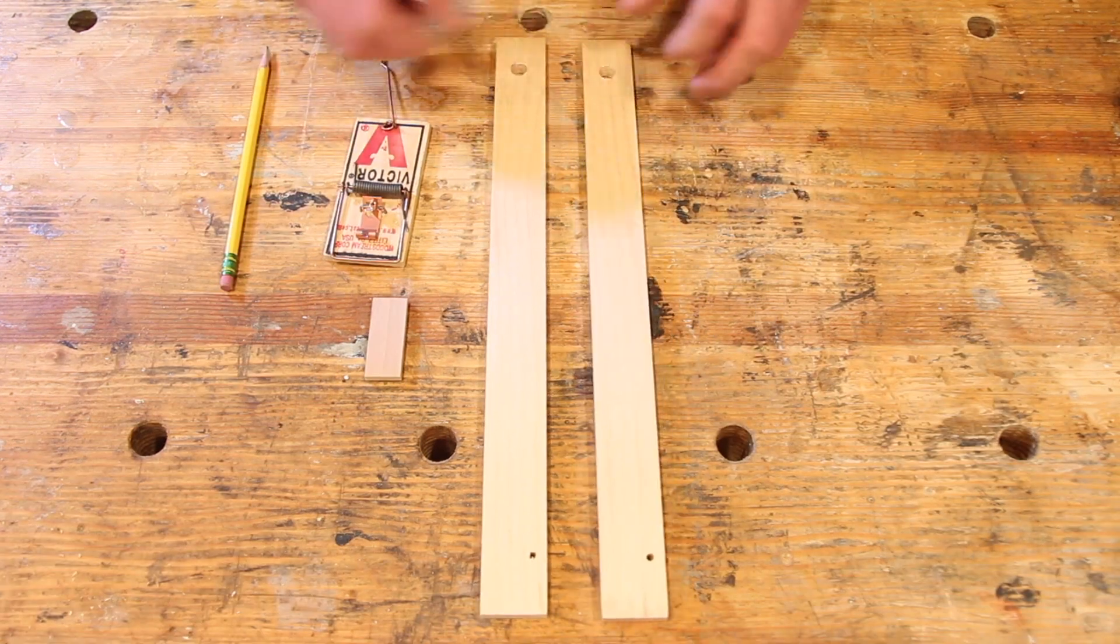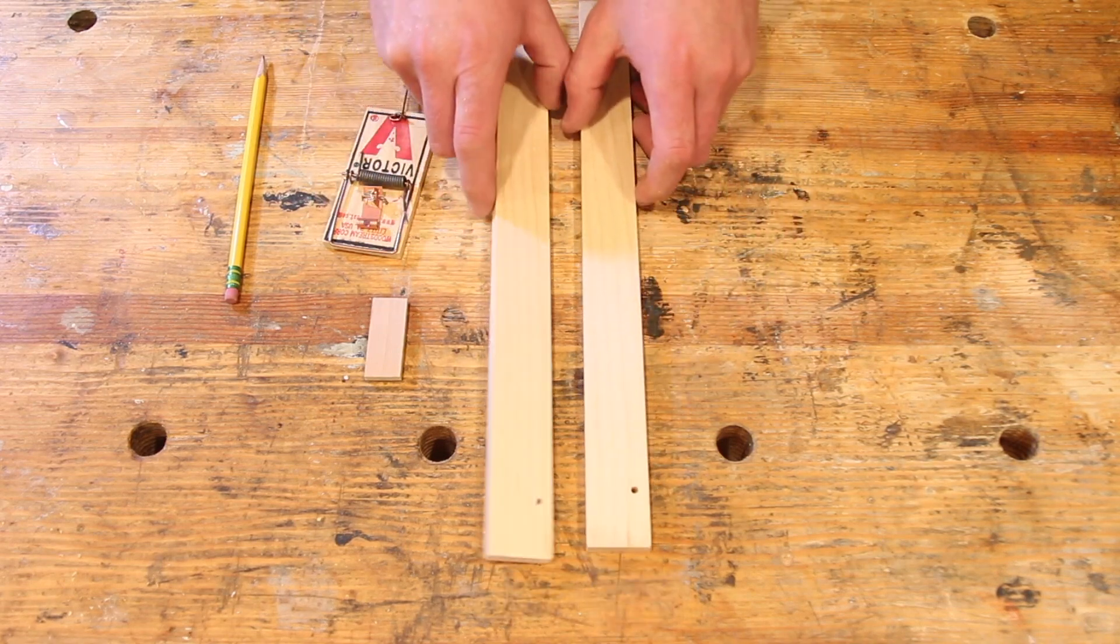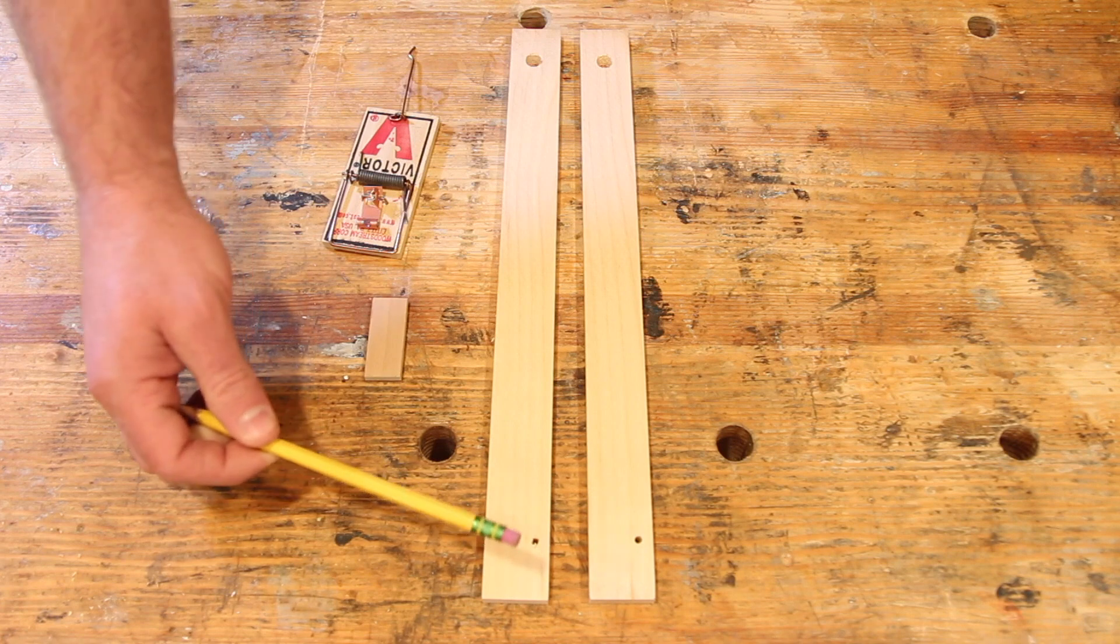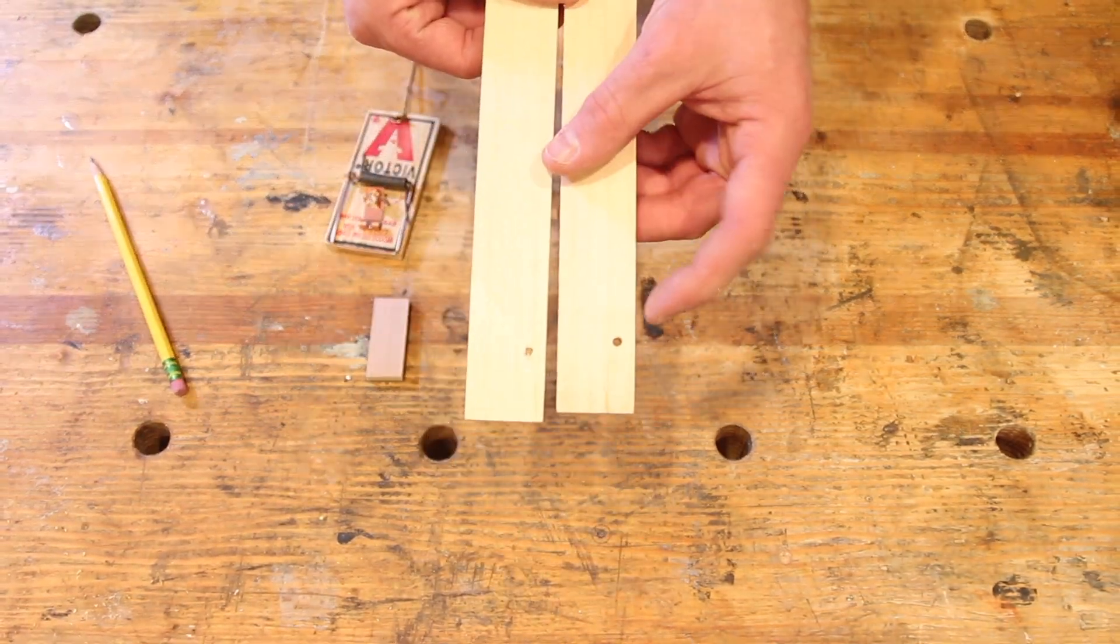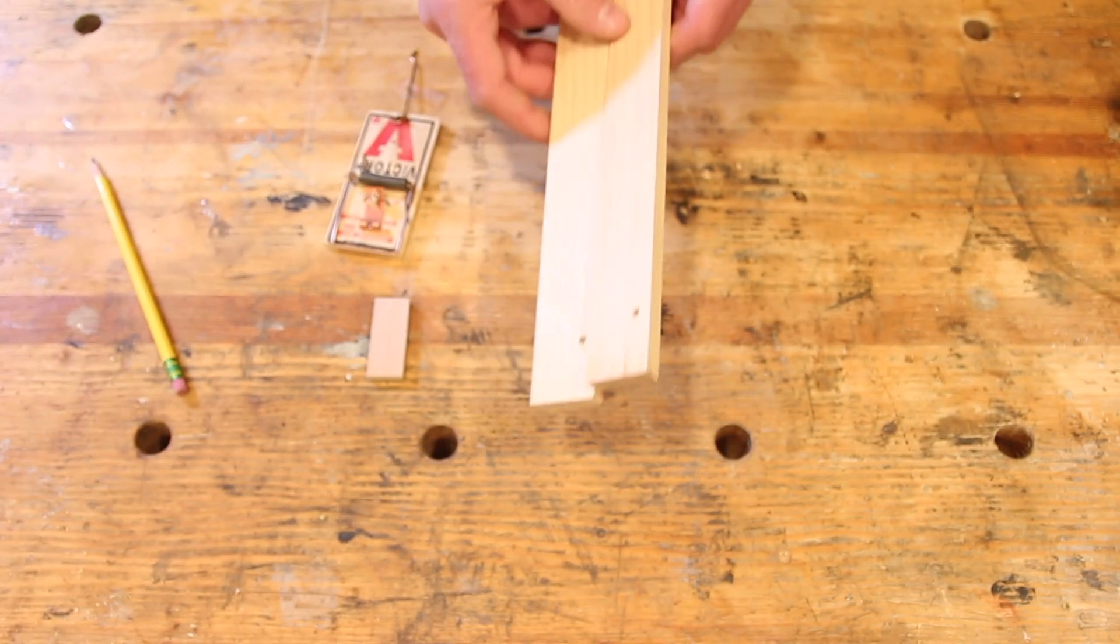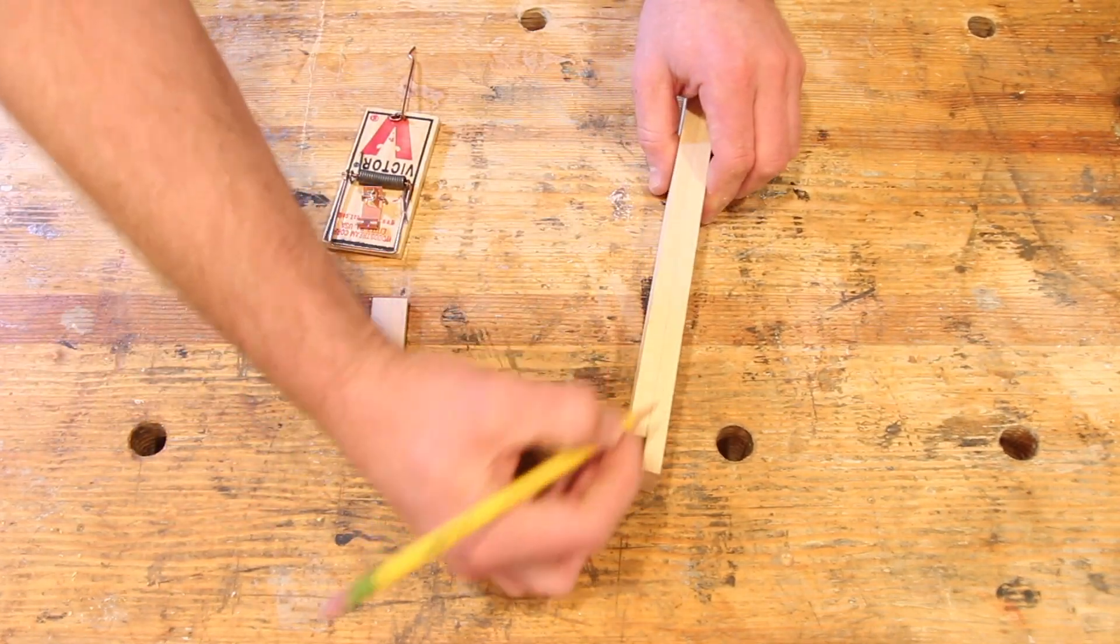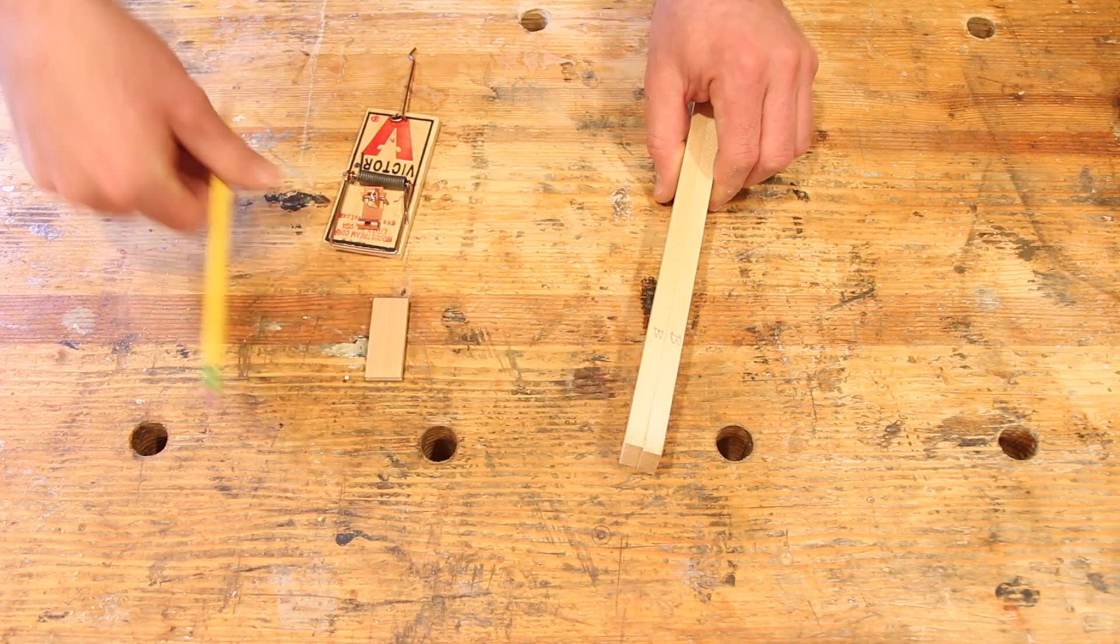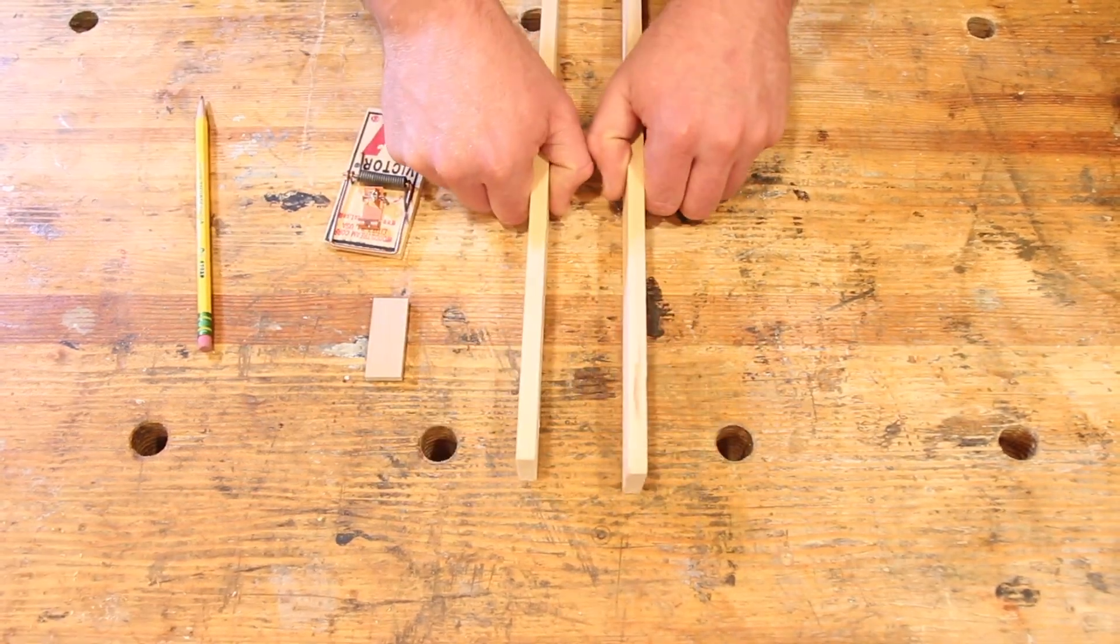First thing we're going to glue is the mousetrap onto our rails. There are two different sizes of holes. There's the big one and the little ones. The little ones are offset. You can see that they're closer to one side than the other. That means that is the bottom of your car. So if it helps and you want to remind yourself, put that down. You can write a B for the bottom on that, so you know to always keep those down.